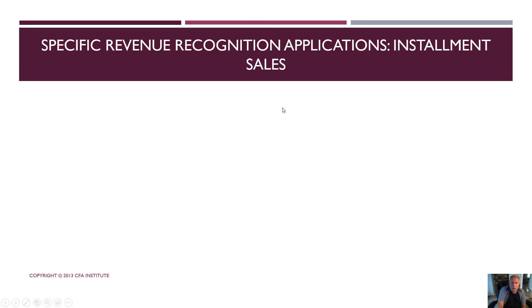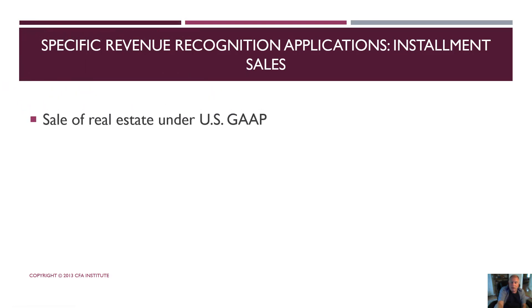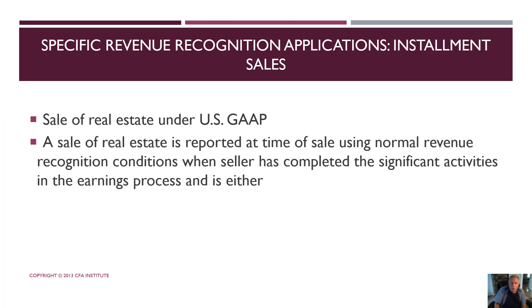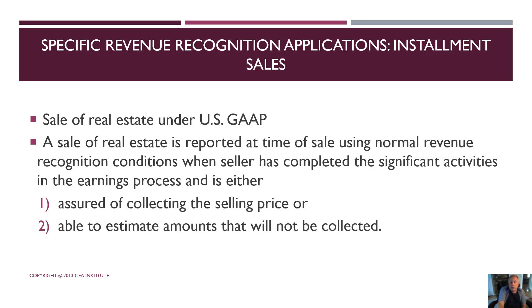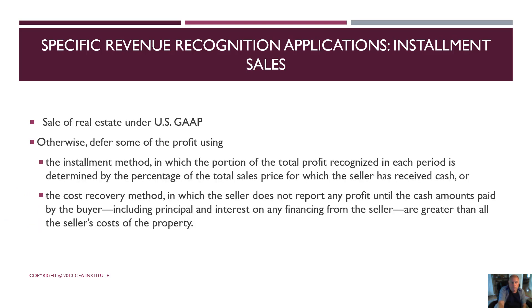Oftentimes, local laws regarding sales may apply. In the sale of real estate under U.S. GAAP, you use normal revenue recognition as long as the seller has completed the significant activities and is assured of collecting the sales price or can estimate amounts that won't be collected. If you're using the installment method, you can recognize a percentage of the profit as payments are received. The cost recovery method is when the seller doesn't report any profit until the cash amounts paid by the buyer exceed the costs of the property.